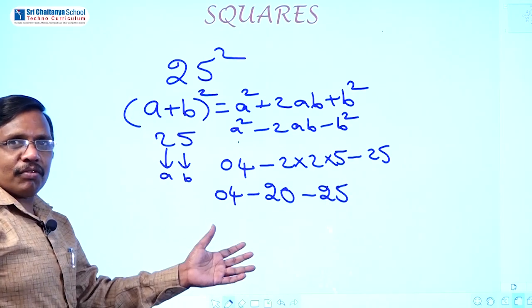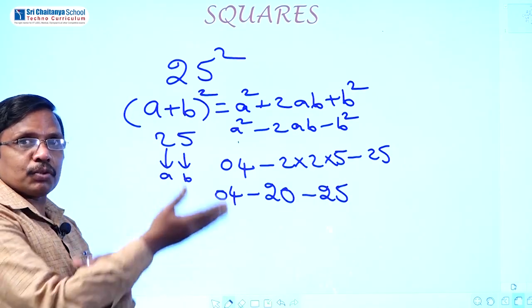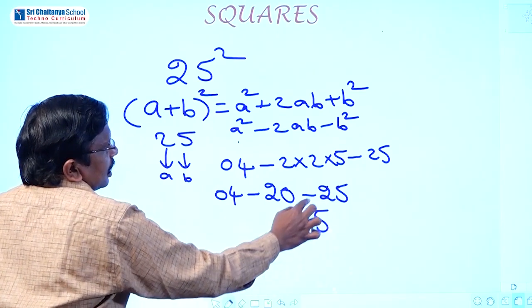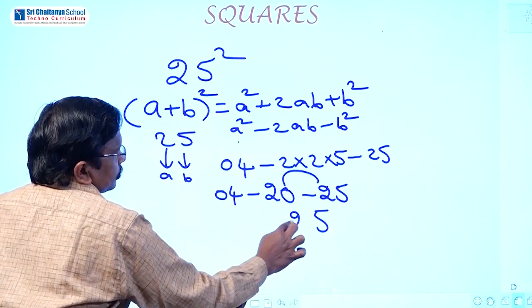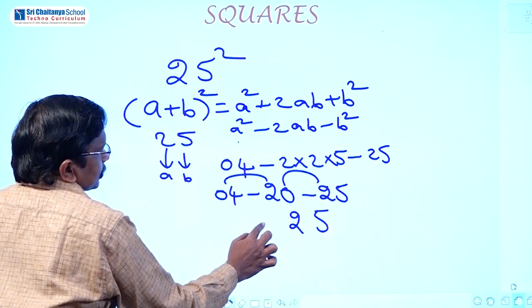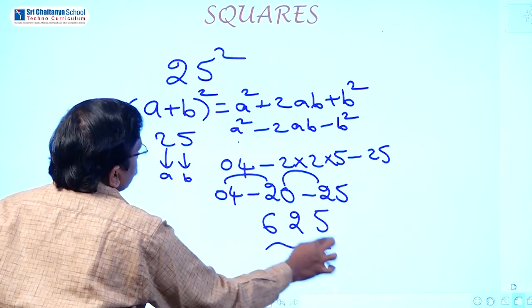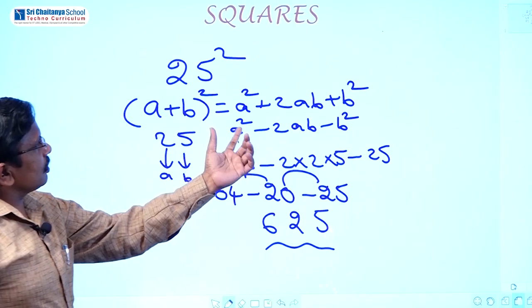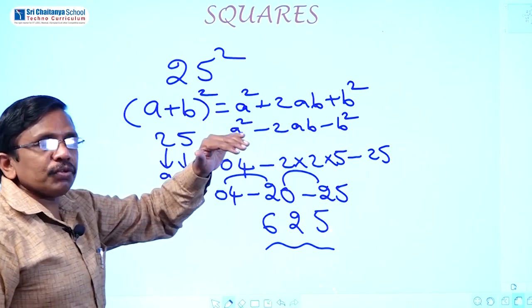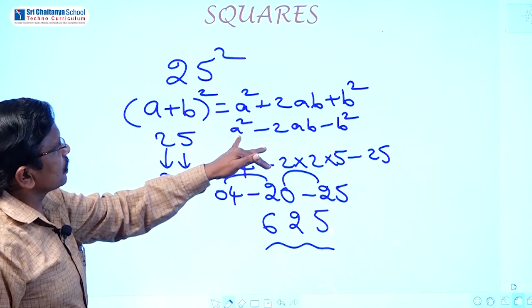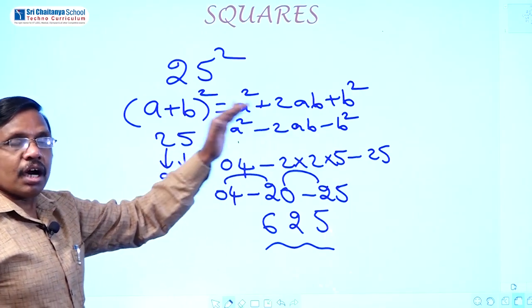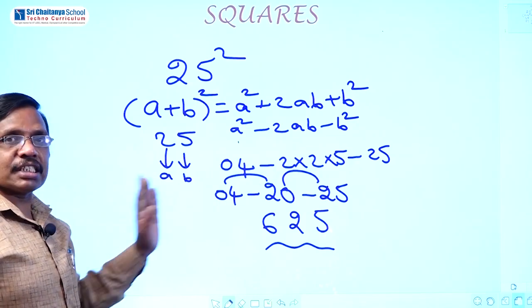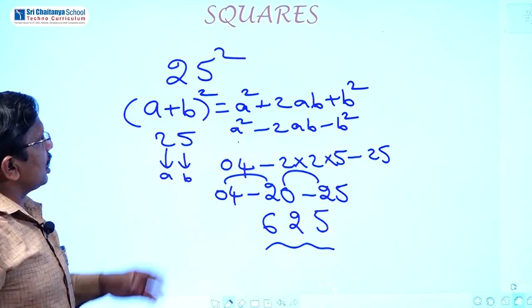Now apply the balancing from right to left. Take 5 as it is. Then 2 plus 0 equals 2. Then 2 plus 6 equals 6. So the answer is 625. That is 25 squared equals 625, found by applying the terms A square, 2AB, B square and balancing.